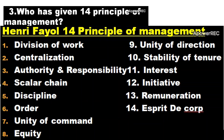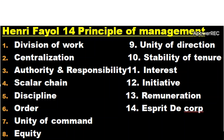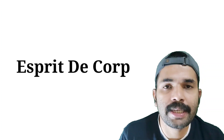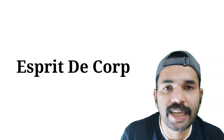Henry Fayol described the 14 principles of management: division of work, centralization, authority and responsibility, scalar chain, discipline, order, unity of command, equity, unity of direction, stability of tenure, subordination of individual interest, initiative, remuneration, and esprit de corps. These are the 14 principles of management — remember them with the mnemonic DRECORP.